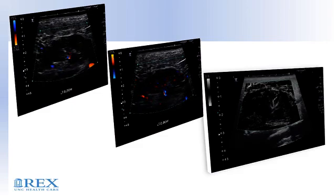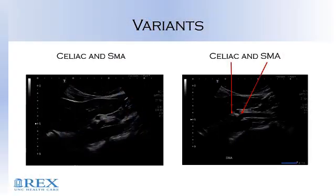How many people do visceral Doppler? This is huge — very important. There are a lot of variants when you're looking at the celiac trunk and SMA. The most common variant is a replaced right hepatic artery. When I looked at this patient, I've only seen this once or twice in my life — it was a conjoined trunk, the SMA coming right off the celiac. Very rare.